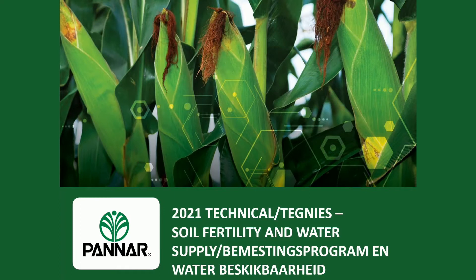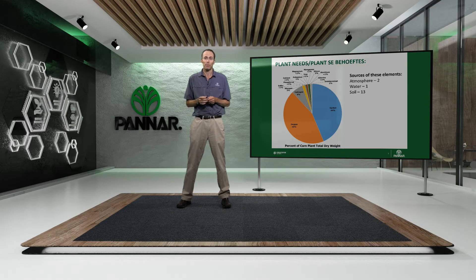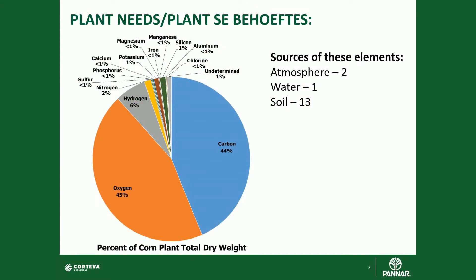Before we get on to the technical aspects of this, let's first have a look at the maize plant and see what its needs are in terms of nutrition and water supply. If we look at the dry matter percentage makeup of a maize plant, we very quickly see that 95% of the plant is made up by carbon, oxygen and hydrogen. These three elements are supplied from the atmosphere and from water. The other 13 elements, which only make up 5% of the dry matter of a maize plant, are what we traditionally fertilize for and are supplied by the soil. But without that critical 5%, the production potential of the maize plant is dramatically reduced. Those 13 components it gets from the soil are critical to the growth and productivity of the maize plant.